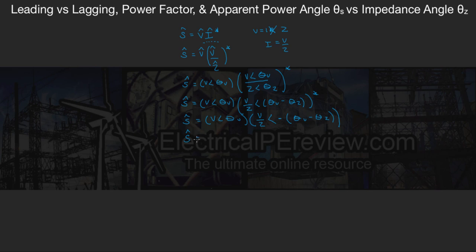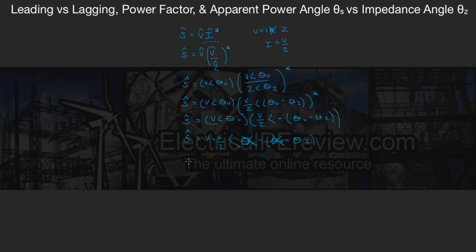Since we're multiplying, we add the angles together, but we must account for the negative. The voltage angles cancel, and because of the negative sign, a negative times a negative gives a positive. So our apparent power simplifies to V squared over Z at an angle of positive theta Z. That's a key result.